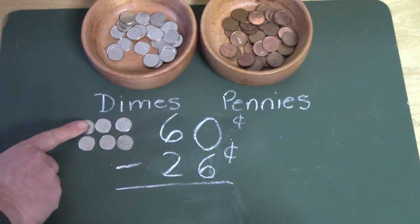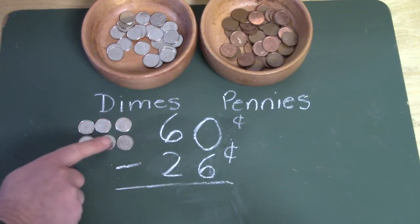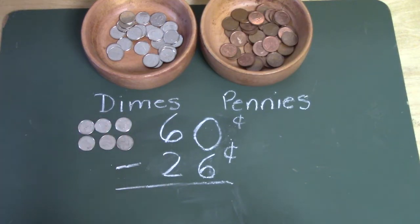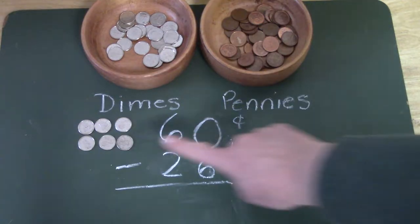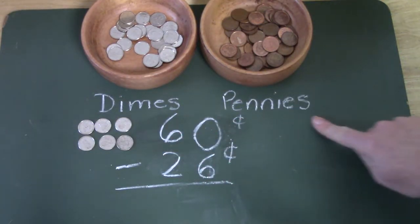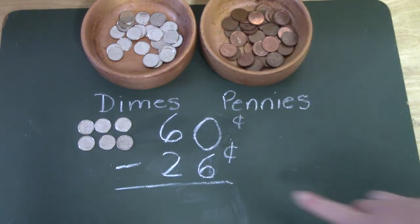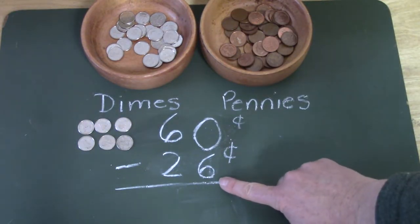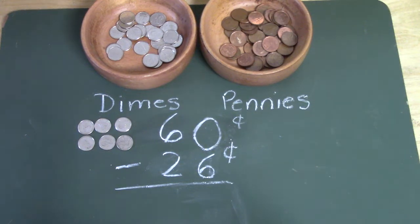Here I have 60 cents: 10, 20, 30, 40, 50, 60. We have six dimes plus how many pennies? No pennies at all. Hmm. How are we going to subtract six pennies from zero?